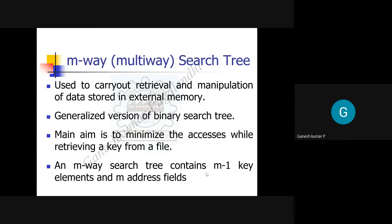The M-way Search Tree is a kind of tree used in external memory for data retrieval, data storage, and data manipulation. It is a generalized version of the binary search tree - whatever tree concept you studied in binary search tree, the same concept is applied here with little modification for external memory. The objective is to minimize disk accesses when retrieving data. If a node is at the 10th or 12th level, this tree will bring it closer to a very small level like second or third.